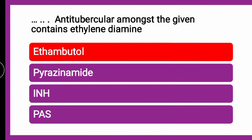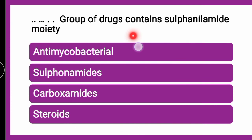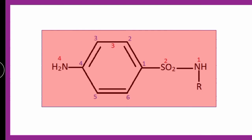The next question is: Which group of drugs contains a sulfanilamide moiety? Whether it is antimicrobial sulfonamides, carboxamide, or steroids? The correct answer is sulfonamides. If you look into the structure of sulfanilamide, when the NH₂ group has one hydrogen replaced with a functional group, it is known as a sulfanilamide derivative, and the complete moiety is the sulfanilamide moiety.